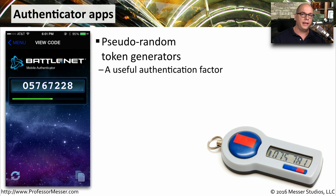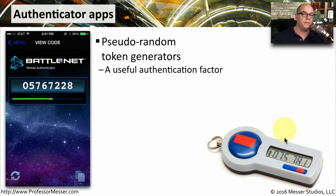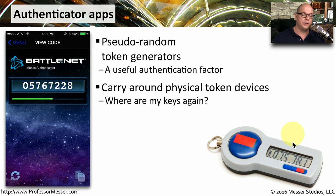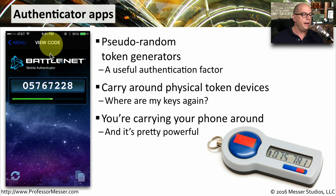Another common authentication factor is an authenticator application. This uses a pseudo-random number that changes every 30 or 60 seconds, and you're usually logging on with a username, a password, and the code appearing on this token generator. Some token generators are physical devices — they might be on a key ring and you hit a button to display the latest code. But since we have our phones with us all the time, we might have this authenticator built into an application on our phone, so that if we have our phone, we're able to authenticate with this additional factor.